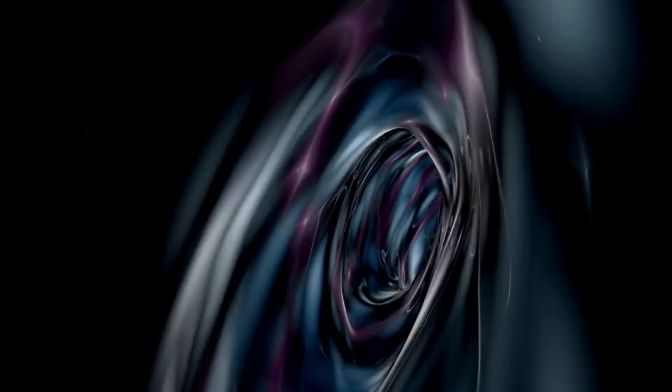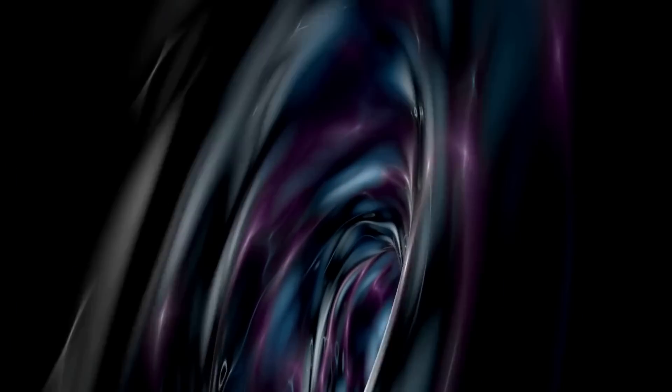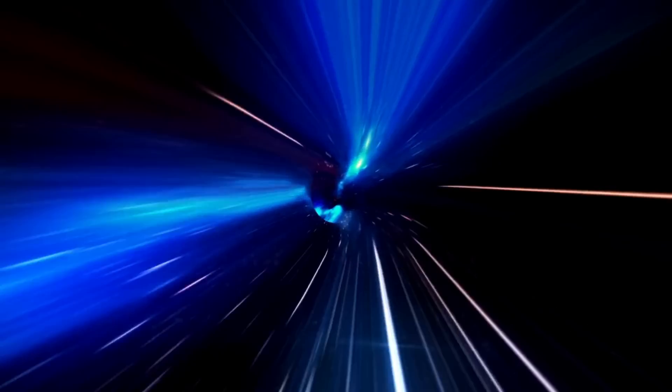Our journey begins with black holes. Collapse any mass considerably, and it becomes ensnared in its own gravity. In general relativity, this is represented as a point of infinite density encircled by an event horizon.